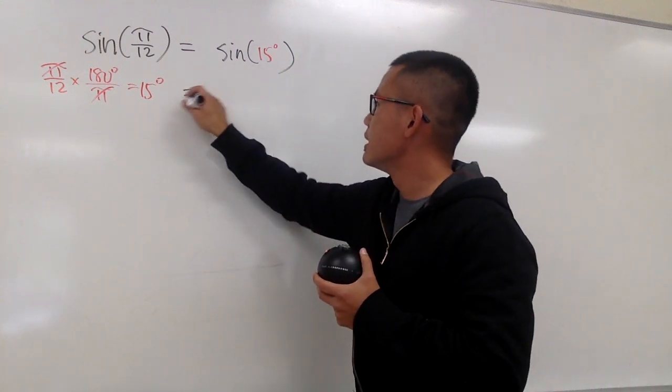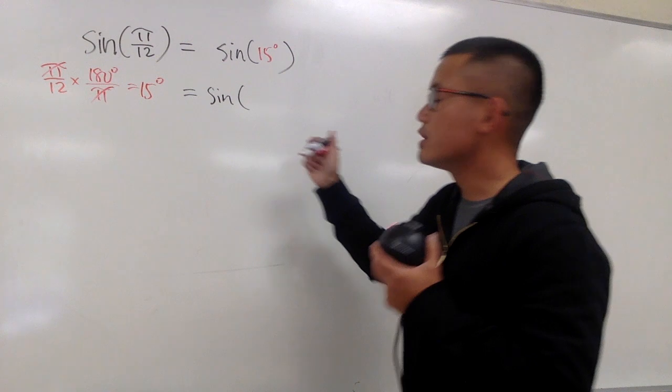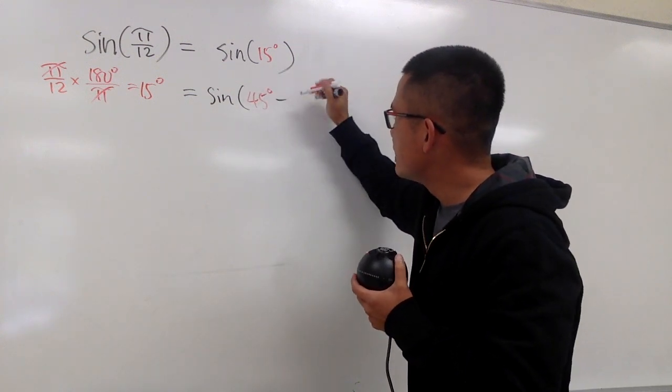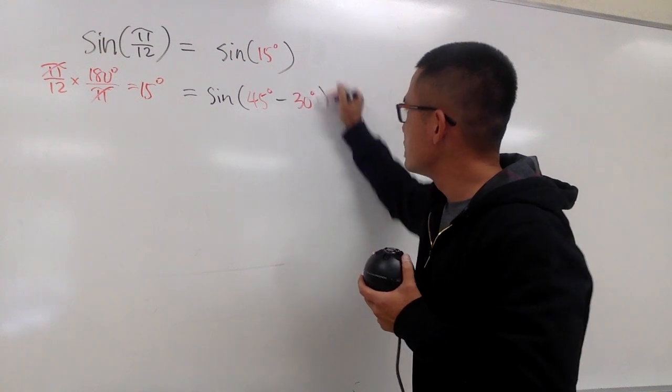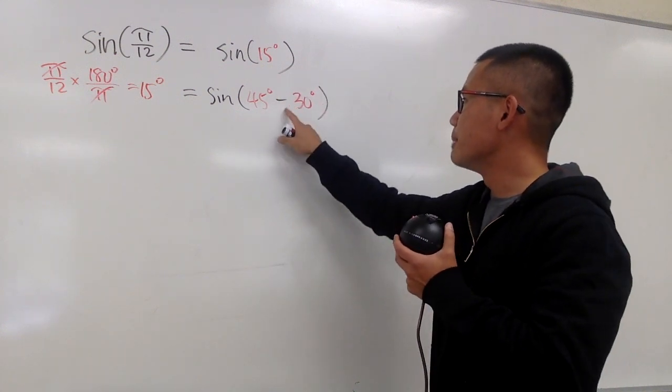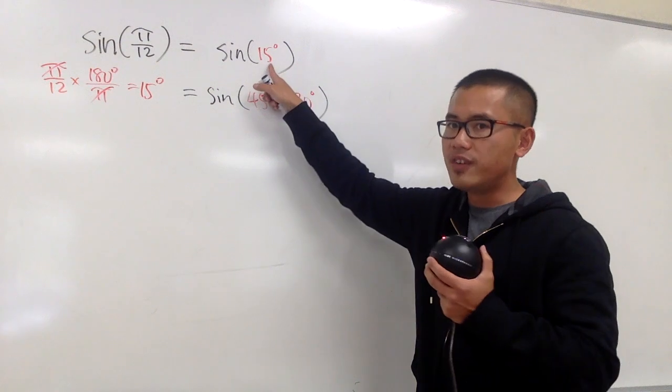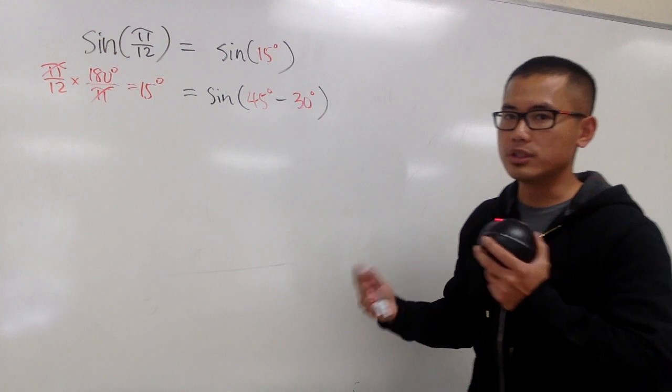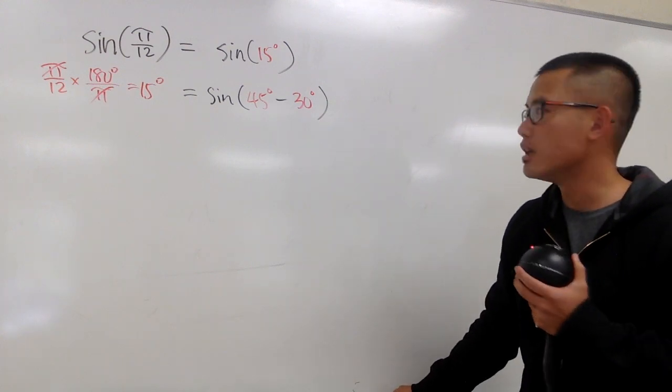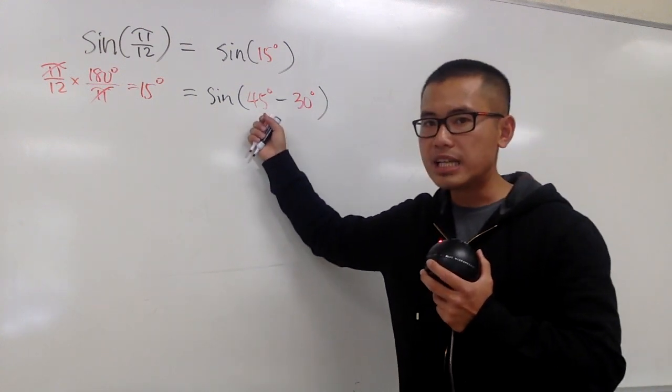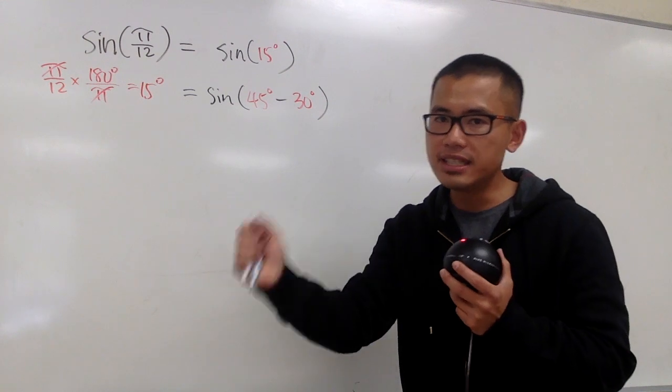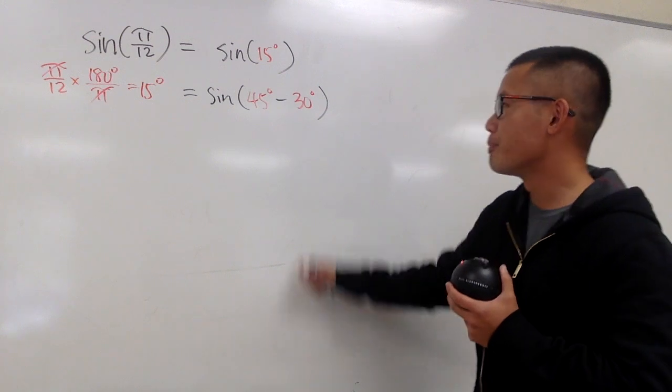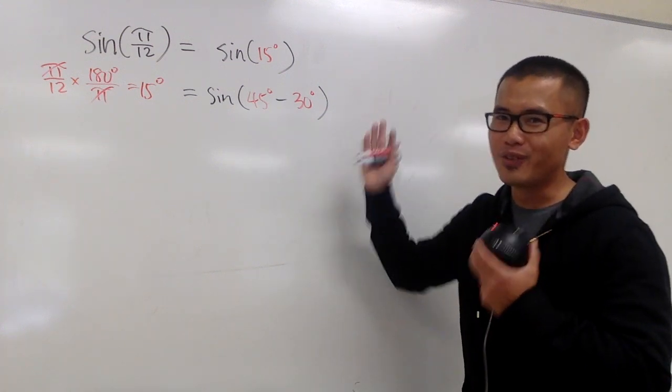So I can write this as sine. In this case, we are using a difference formula. Let me put this down as 45 degrees minus 30 degrees. And you may also notice that we could have used 60 minus 45, which is still 15, and that's still possible. But I put this down already, so we'll continue from here.